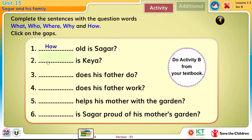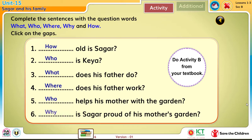How old is Shagor? Who is Kea? What does his father do? Where does his father work? Who helps his mother with the garden? Why is Shagor proud of his mother's garden?